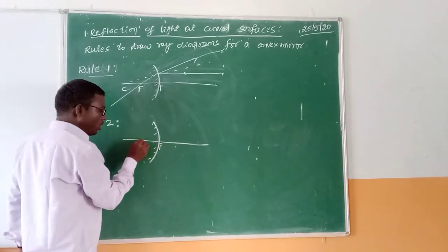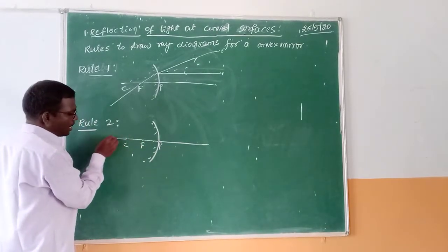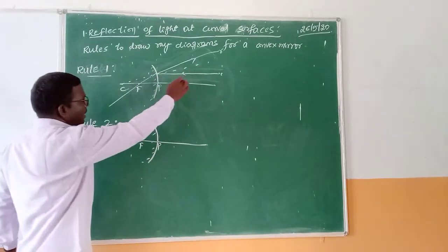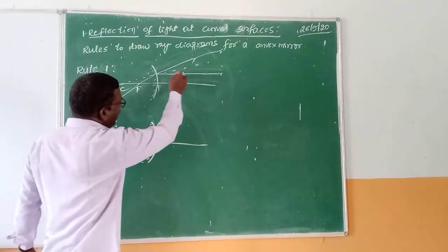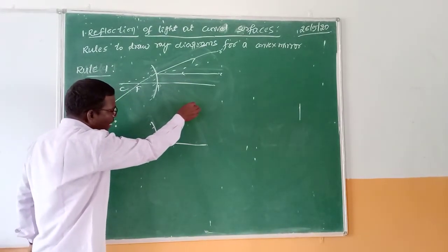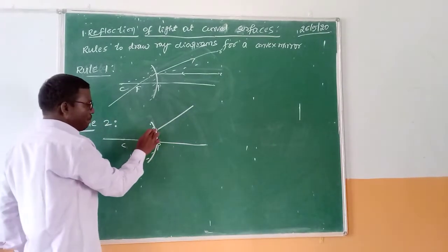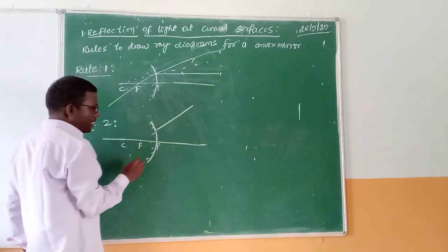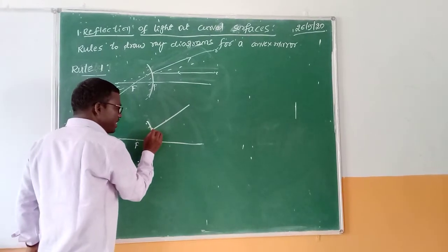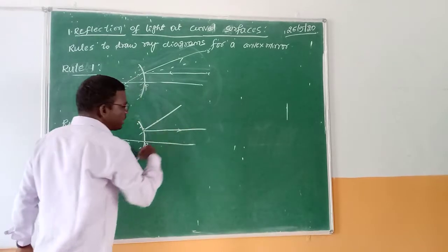Now let us discuss Rule 2. Imagine that it is a convex mirror and draw a principal axis representing the pole, focus, and center of curvature. In Rule 1, we drew the light ray which is getting incident traveling parallel to the principal axis. Now in Rule 2, imagine that the light ray which is getting incident will travel toward the principal axis directed toward the focus.